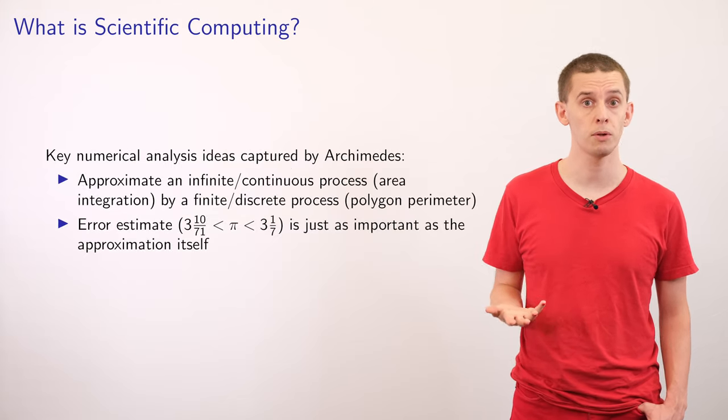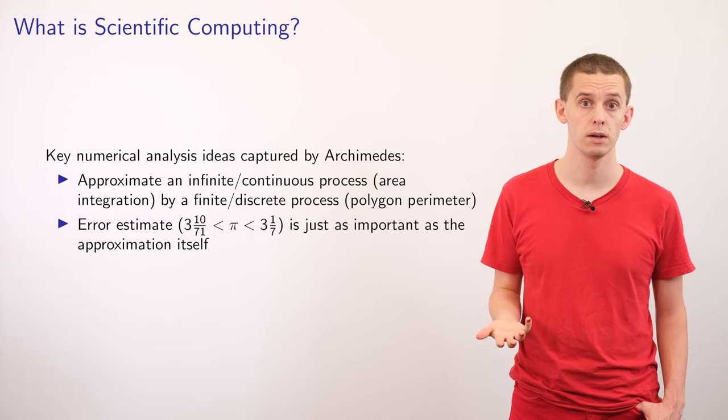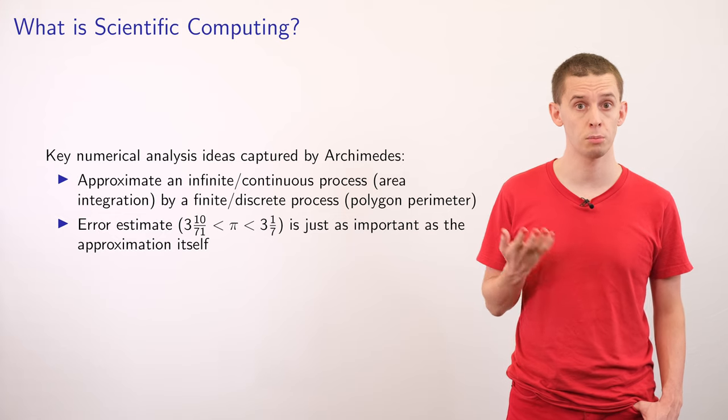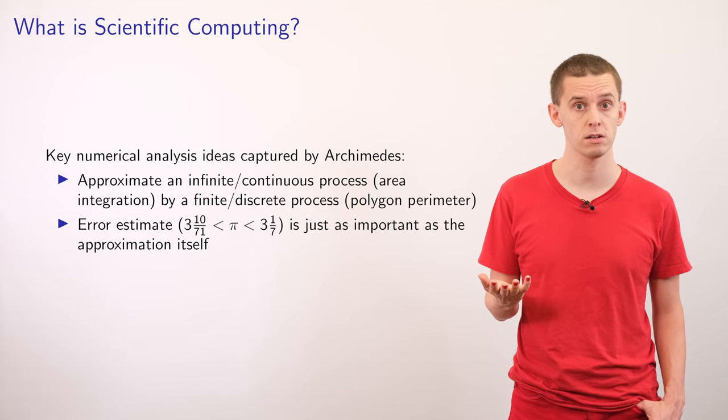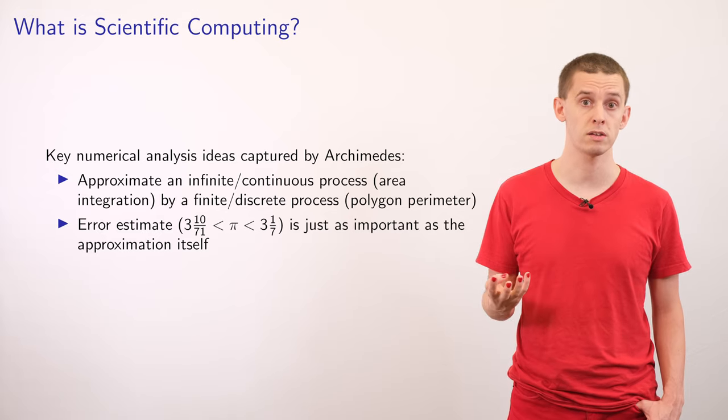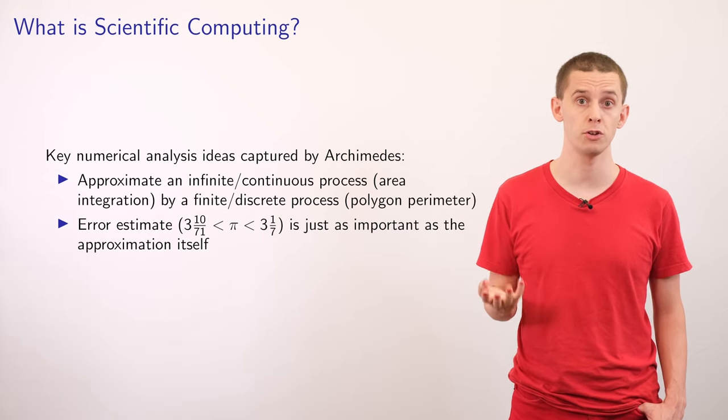which is a bound range of only two one-thousandths. And it's really remarkable that this was done two millennia ago. And we see a number of real advances in thinking here. Firstly, he was able to approximate a continuous process, the idea of area integration, with a discrete process, the idea of evaluating areas of polygons.